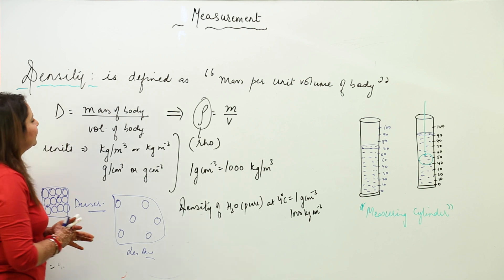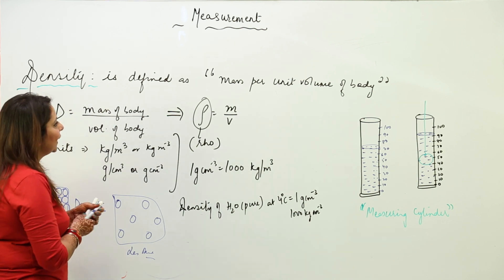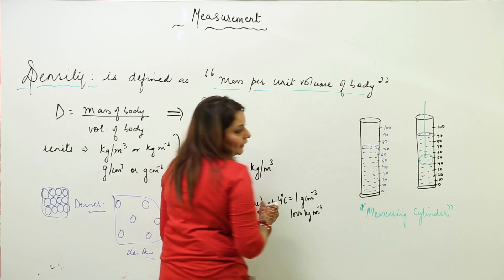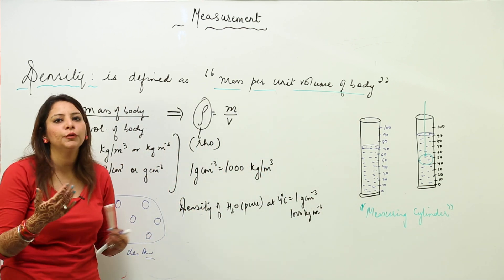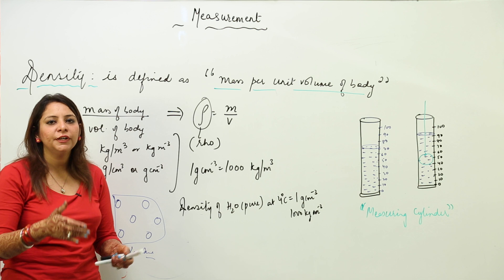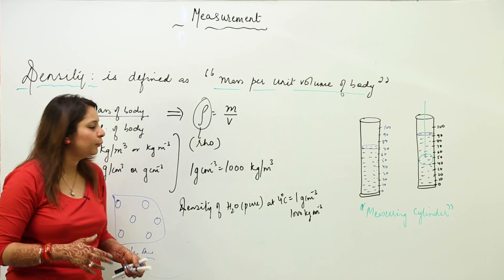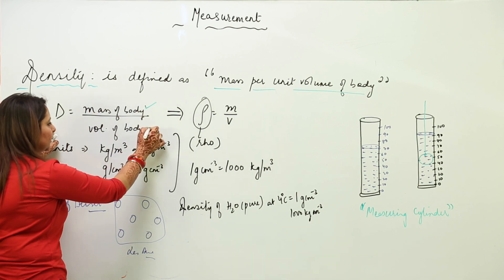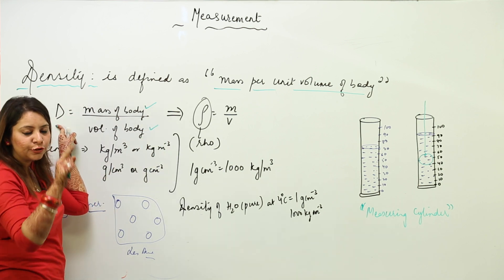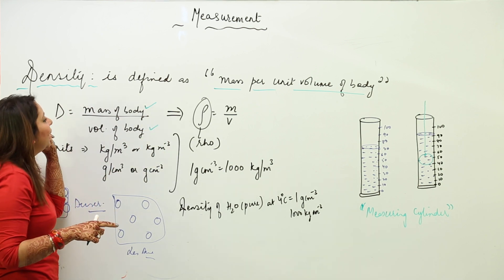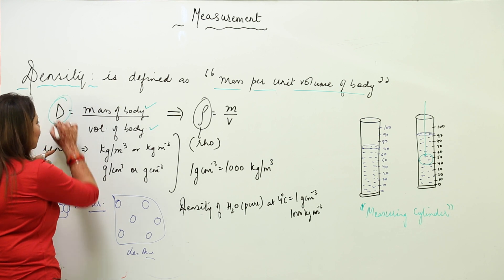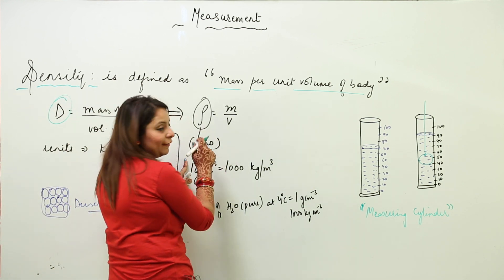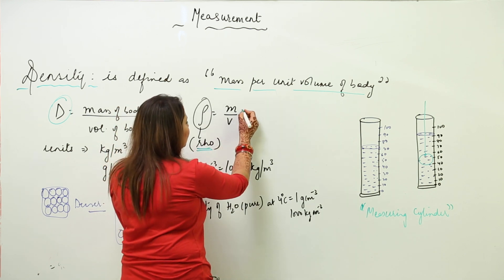If we define density, it is actually mass per unit volume of the body — that means the mass of the body divided by the volume of the body. So density is the ratio of mass to volume for a body. We denote density by the symbol rho (ρ), and it is equal to mass per unit volume.